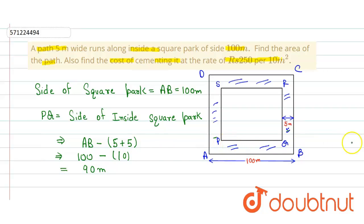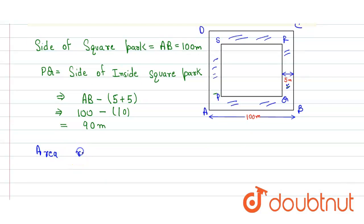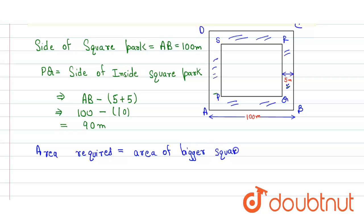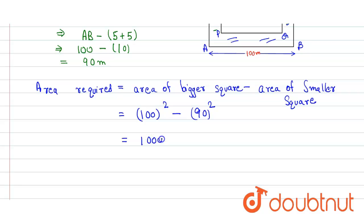Now we find the area of the square path. The area required will be equal to the area of the bigger square minus the area of the smaller square PQRS. So the area equals 100 squared minus 90 squared, which is 10000 minus 8100, giving us 1900 meter square. That's our answer for the first part.